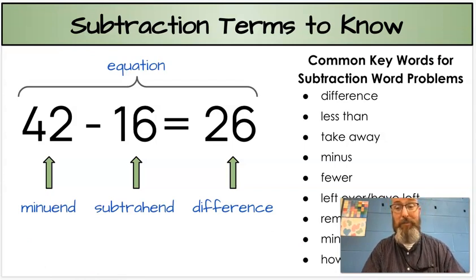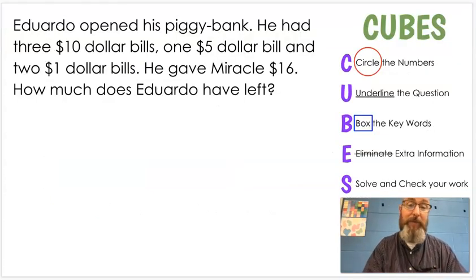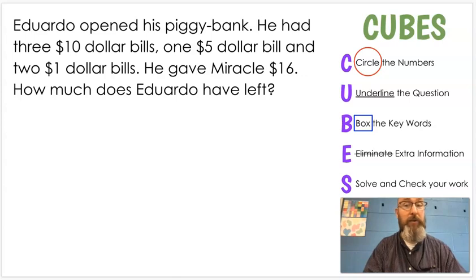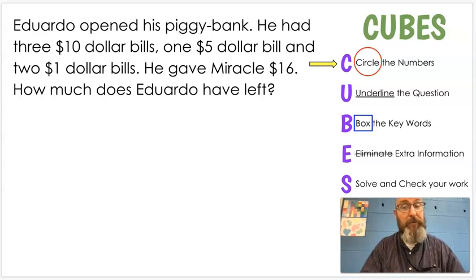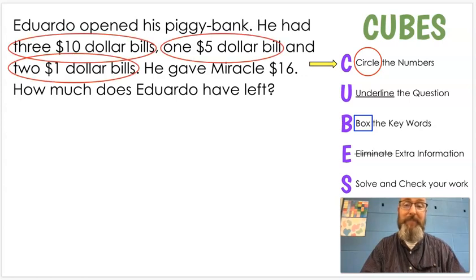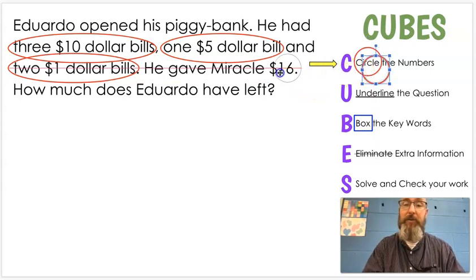Now, are you ready to get started? We're going to practice three together, and then we're going to be done. Our first question today — read this with me if you want. Eduardo opened his piggy bank. He had three $10 bills, one $5 bill, and two $1 bills. He gave Miracle $16. How much does Eduardo have left? This is a two-step problem. The first thing we need to do is circle the numbers. It looks like I left one out on the 16 — I should have circled that too. Let me go ahead and do that right now.